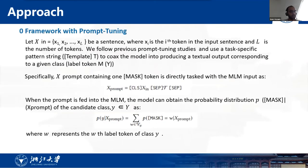First, I will introduce some background of prompt tuning. Let X be a sentence, where x_i is the i-th token in the input sentence and L is the number of tokens. We follow previous prompt tuning studies and use a task-specific pattern string T to coax the model into producing a textual output corresponding to a given class y. Specifically, X containing one [MASK] token is directly tasked with the mask language modeling input. When the prompt is fed into the mask language modeling, the model can obtain the probability distribution about mask given the candidate class.